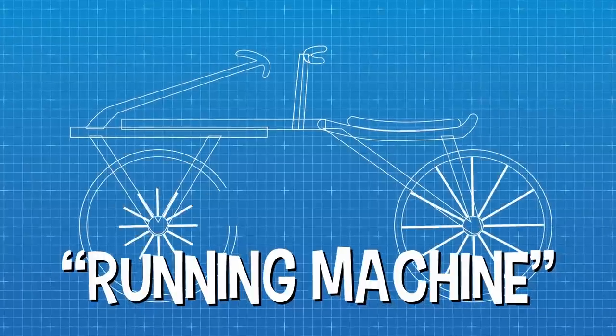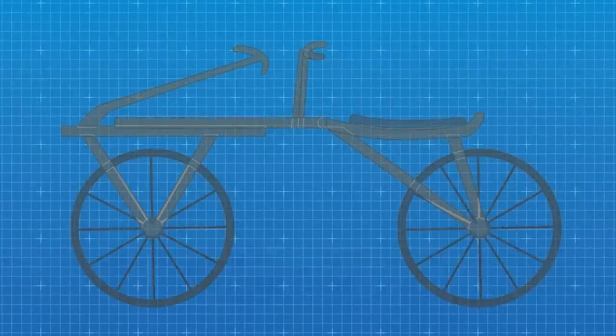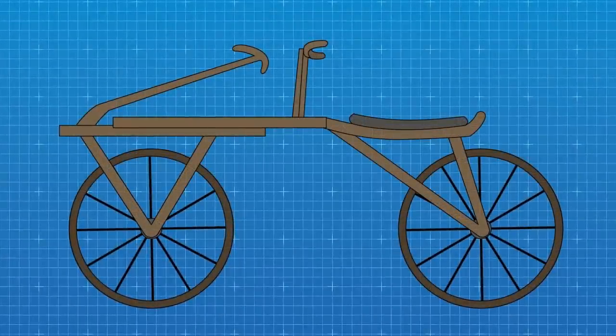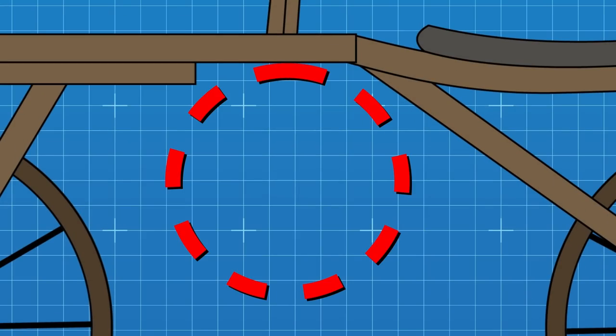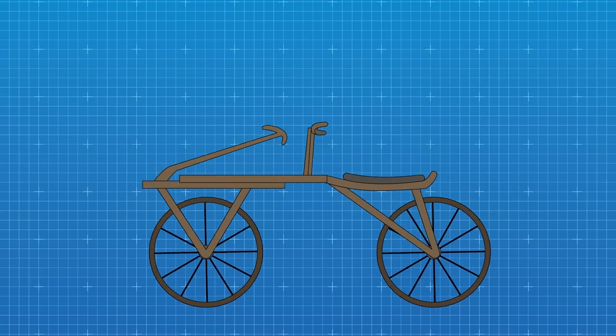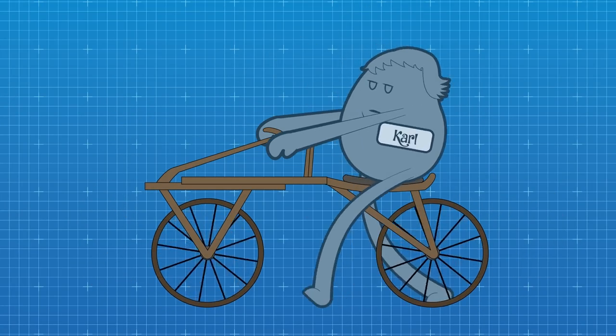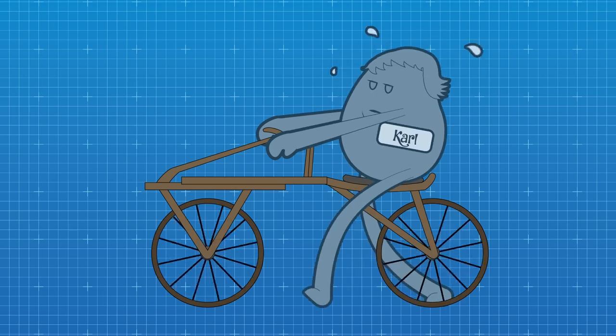The lauf machine, also known as the dandy horse, was basically everything a bicycle has today, except no pedals. The rider would balance on a wood plank and make the two wheels move by running. It was kind of a workout.